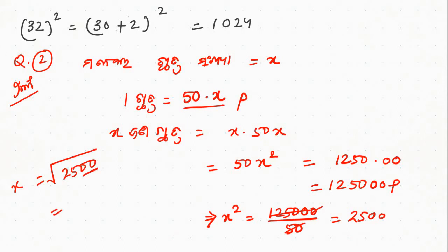If you have a student or a student, you can find a student. You can find a student or a student, or a student. This question is very important. Ask yourself how many students are in school. So 50 x2, 50 x2 to 1250.